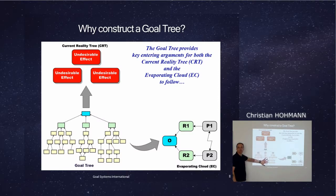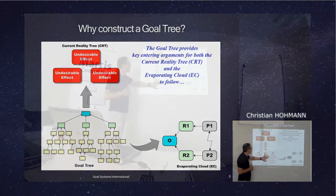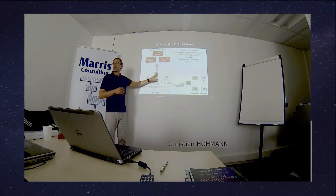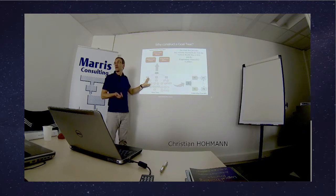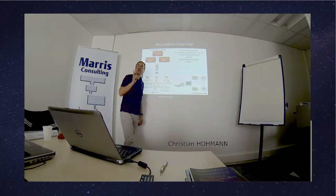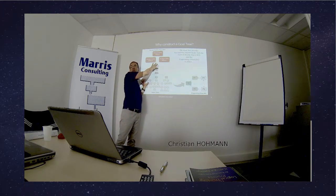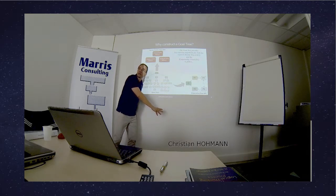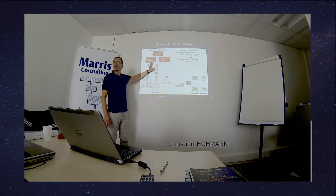We are not there, so we have a drift between what we want to achieve and what we actually have. So we have undesirable effects — the goal is not achieved, or one or more critical success factors are not yet achieved. At that moment, we can see the effects, but we are not sure why it's not happening, because we are dealing with complex systems which can go quite deeply into the details.